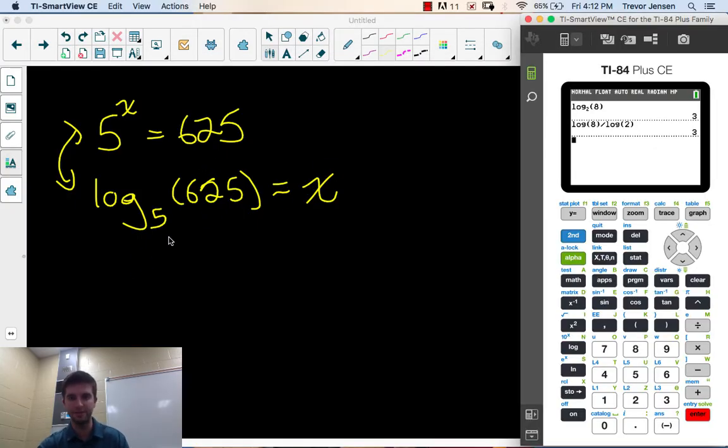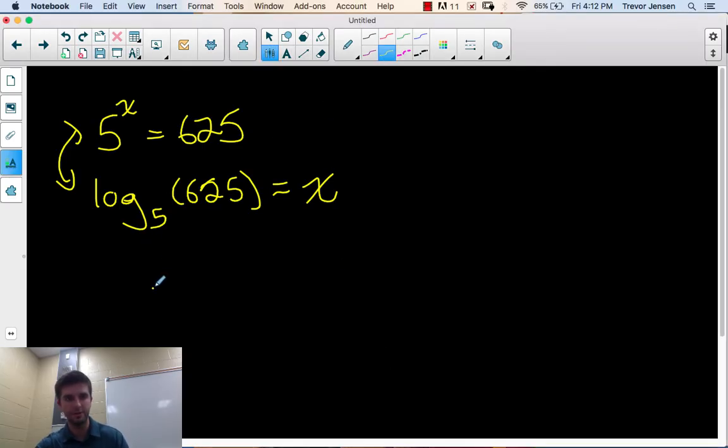We can evaluate that in two ways. Either type this exactly on your calculator if you can change the button, but if you don't have the button that allows you to change the base, use base 10 logs. Do log of 625 divided by log 5. We figure out the answer is 4, because 5 to the power of 4 is 625. So our answer to this x is 4.